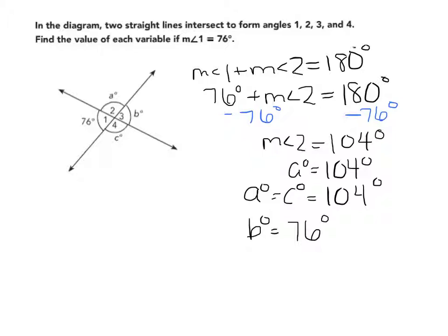We can check that: we have 104 plus 104 plus 76 plus 76, and that will give us 360 degrees. So we know that we have found a correct solution.